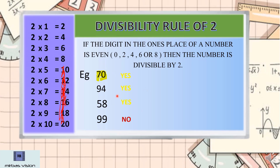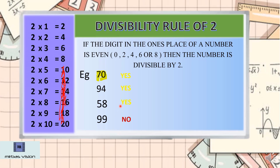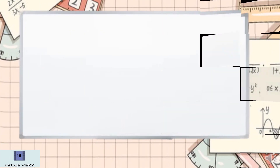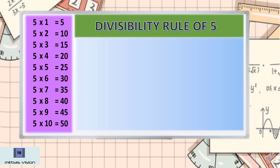Now I think you understand how to use the divisibility rule. You also understand the difference between numbers that are divisible and numbers that are not divisible. Now, going to divisibility rule of 5. Here we can see the multiplication table of 5.